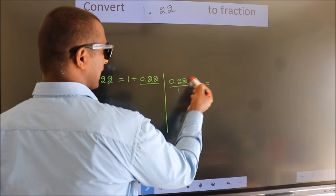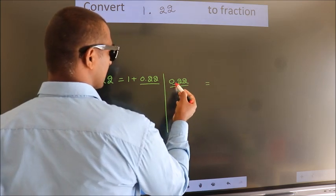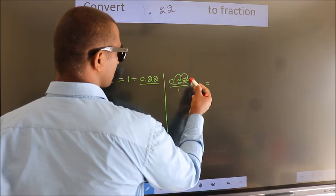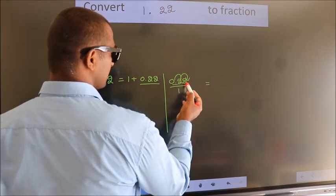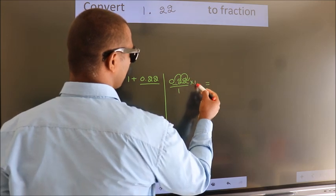To convert this to fraction, we have to move this decimal after 2 numbers. To move this decimal after 2 numbers, we should multiply it with 100.